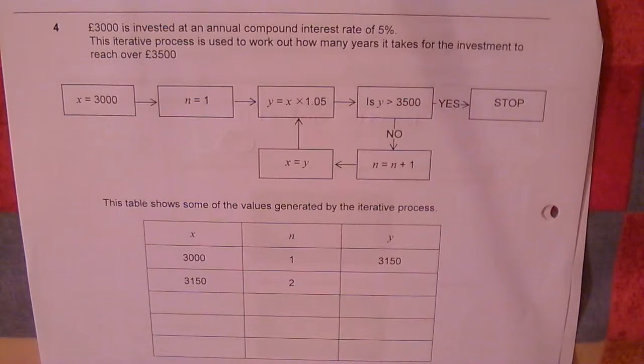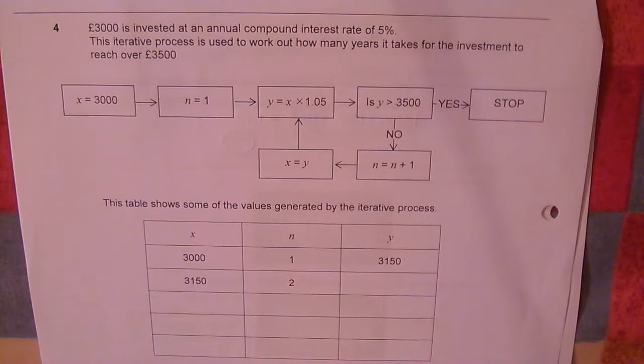Question number four. £3,000 is invested at an annual compound interest rate of 5%. This iterative process is used to work out how many years it takes for the investment to reach £3,500.